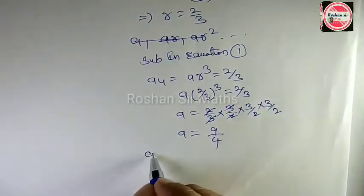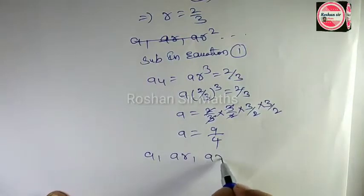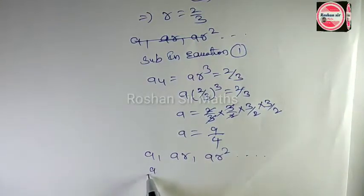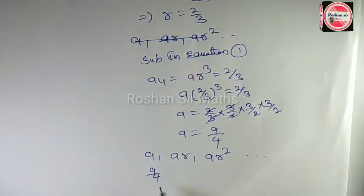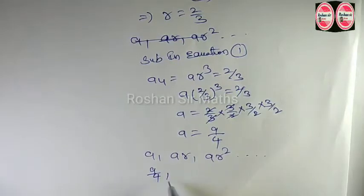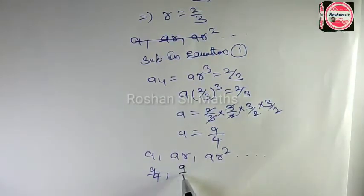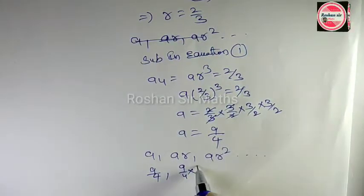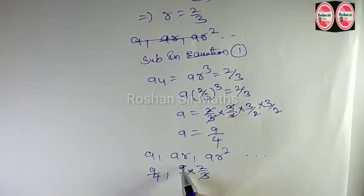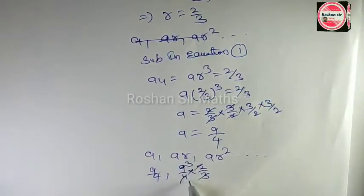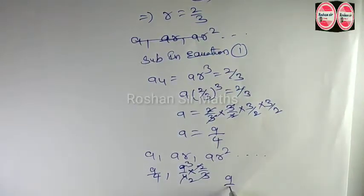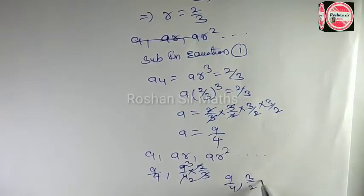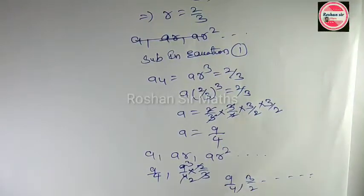अभी A, AR, AR square — यह GP की series है. A हो गया 9 by 4. AR में 9 by 4 में R = 2 by 3 multiply कीजिए: 9 by 4 × 2 by 3. 3 cancel होकर 3 by 2 आ जाएगा. इस तरह series बन जाएगी: 9 by 4, 3 by 2, 1.